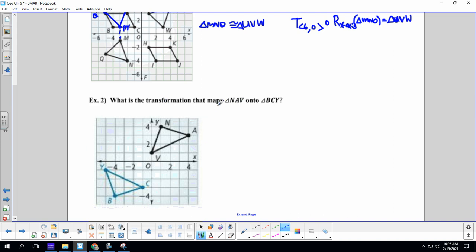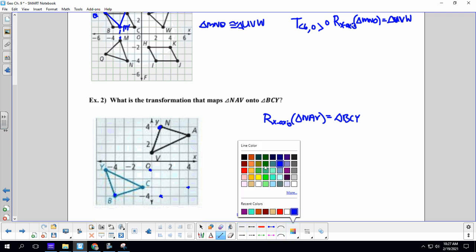All right. Example two. What is the transformation that maps N-A-V onto B-C-Y? So, N goes with B. We can pick a point to kind of guide us. So, N goes with B. So, if you look, N is on top here. B is on the bottom here. I think we need to reflect it first. So, we're going to reflect it first across the x-axis. So, when we do that, we get 1, 2, 3, 4, 1, 2, 3, 4, 1, 2, 3, 4, 1, 2, 3. We get this little shape here. And now you can see it's oriented the right way. I love it when a plan comes together.